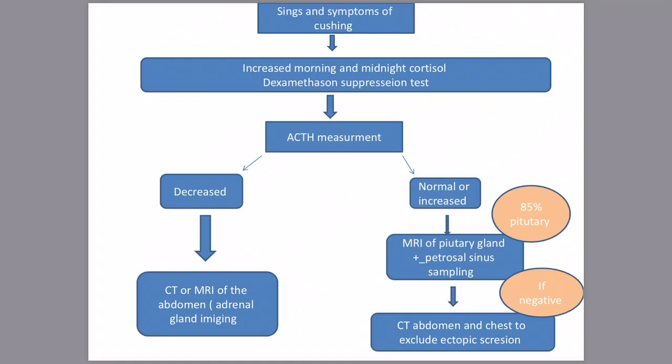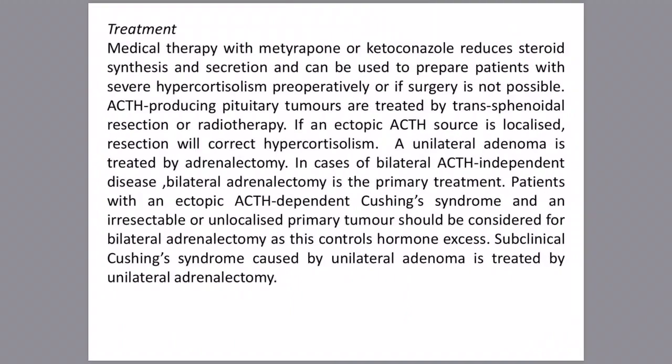If pituitary MRI and petrosal sinus sampling are negative, CT of the abdomen is performed to exclude ectopic ACTH secretion from tumors such as bronchogenic carcinoma, neuroendocrine tumors of the pancreas, or carcinoid tumors of the intestine.